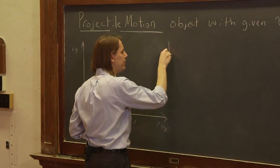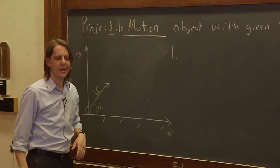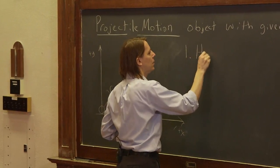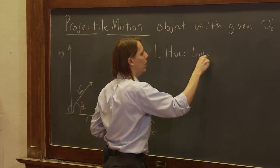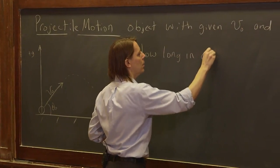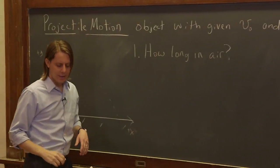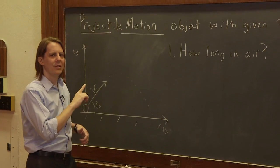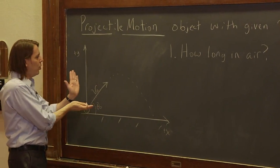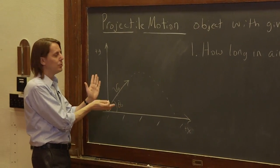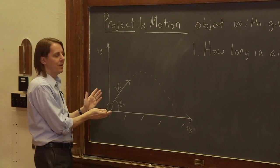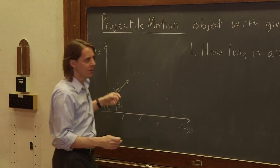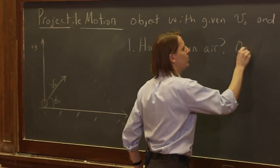Now we want to describe that parabola by answering three questions. First question: how long is it in the air? The key thing to remember is that this only depends on one of the two directions — the two directions have independent kinematics — and how long it's in the air depends only on the y-motion.